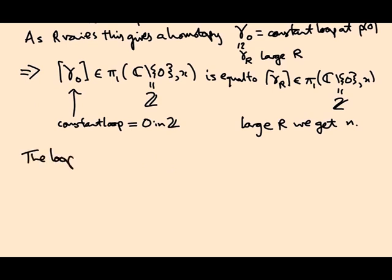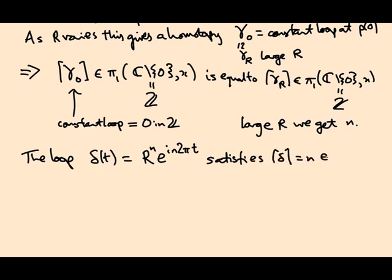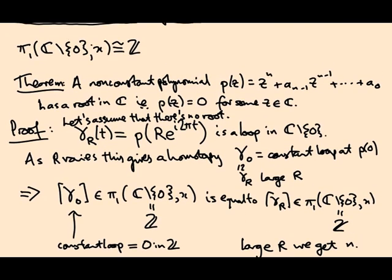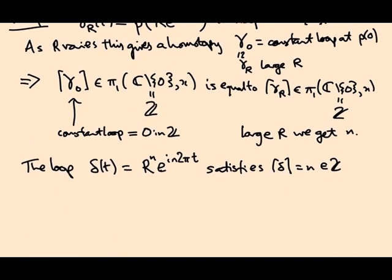And I guess I should say the loop delta of t equals r to the n e to the i n 2 pi t satisfies homotopy class of delta equals n in Z. OK, so this I guess is a part of the proof that pi one of C minus the origin is Z. You need to check that some loop gives you each integer. This is going to be the loop that gives you the integer n. So this is, again, we've not proved this fact. This is something that will prove later.